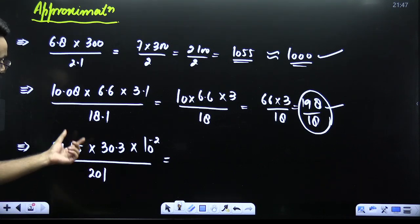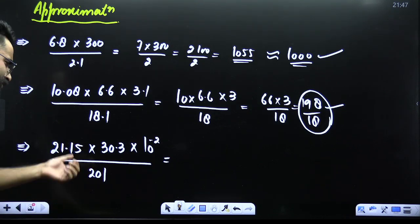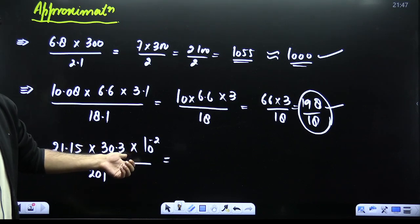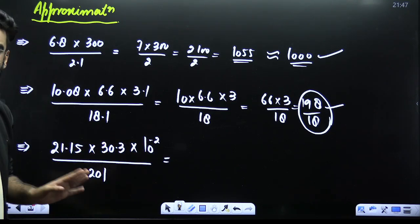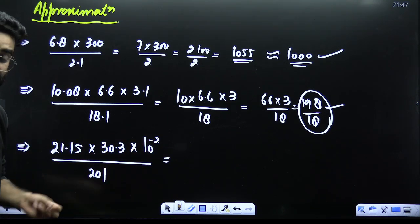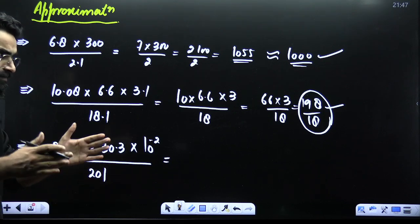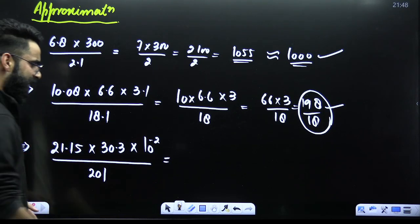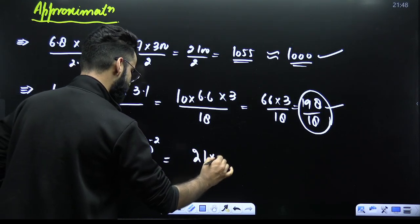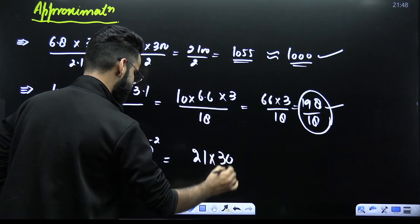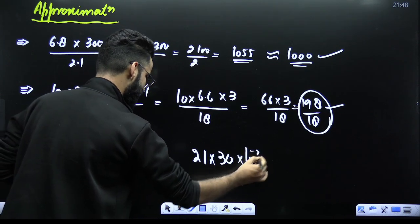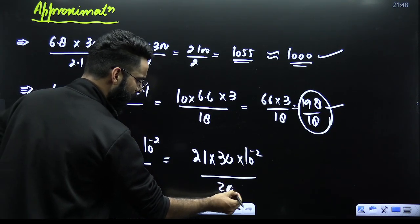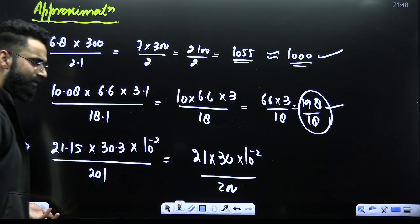Look at another one: 21.15 × 30.3 × 10^(−2) / 201. Do not multiply everything out precisely. Use approximation — write 21.15 as 21, 30.3 as 30, keep 10^(−2), and write 201 as 200. Now the numbers are much cleaner and the calculation is straightforward.